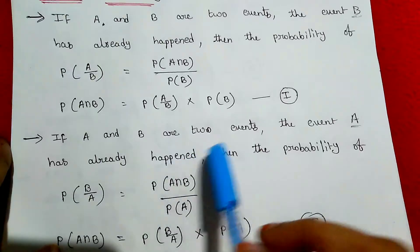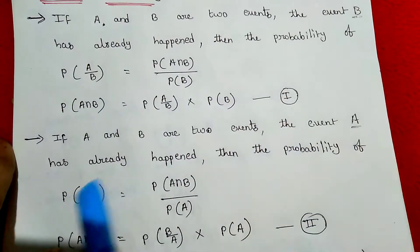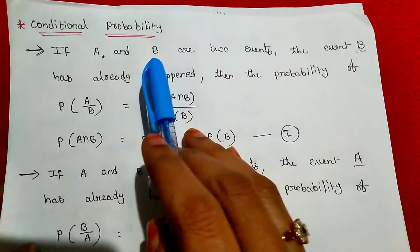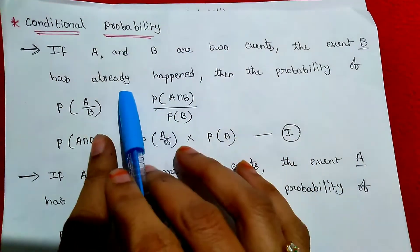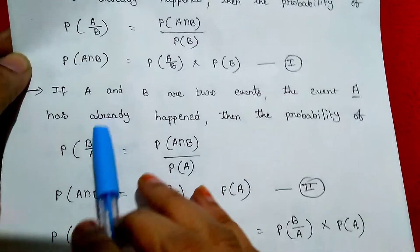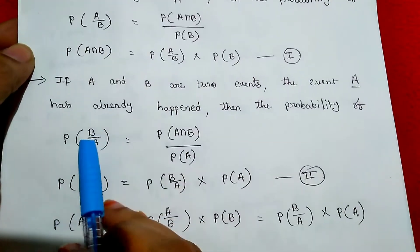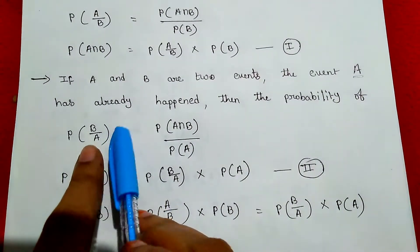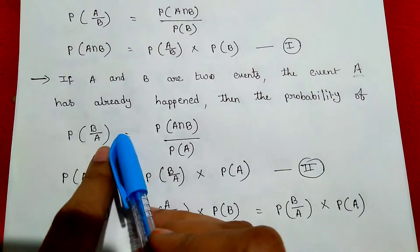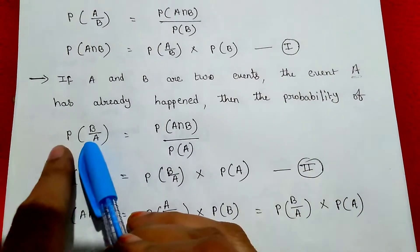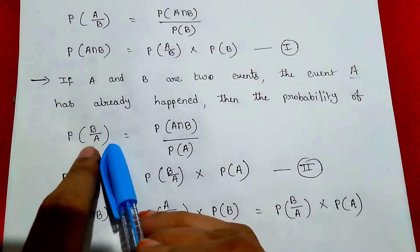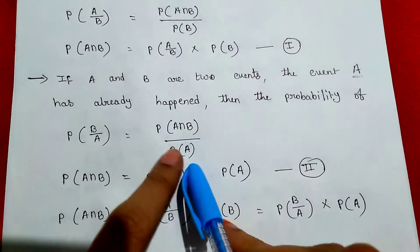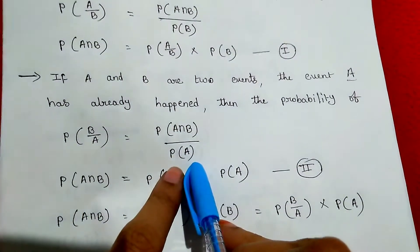If A and B are two events and event A has already happened, then the already happened event goes in the denominator. So probability of B given A is equal to probability of A intersection B divided by probability of A.